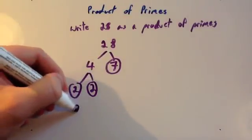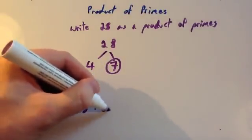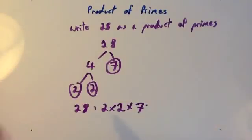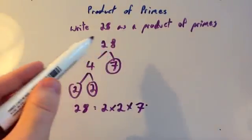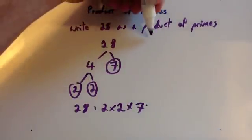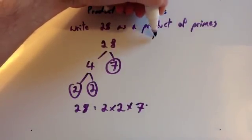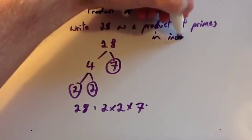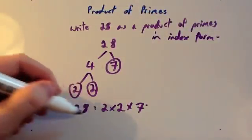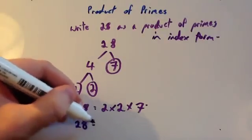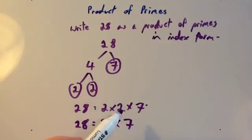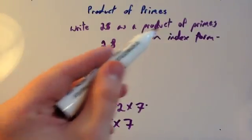And there we're finished. So 28 equals 2 times 2 times 7. Sometimes you'll see it written as a product of primes in index form. If it ever says in index form, see this 2 times 2 — well, 2 times 2 is 2 squared — so you'd write it as 2 squared times 7. That would be in index form.